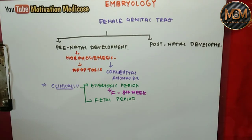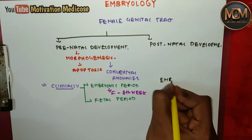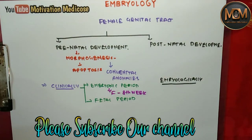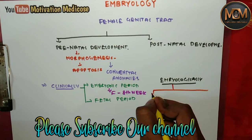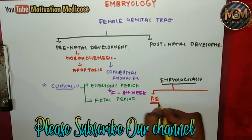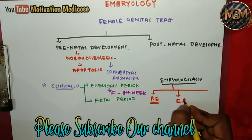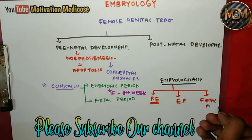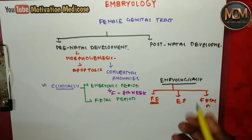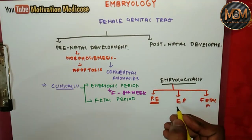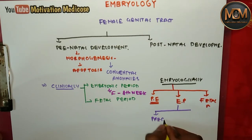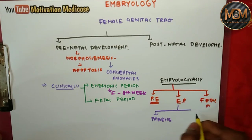Now let's talk about the embryological division. Embryologically, we have divided development into three parts: the pre-embryonic period, the embryonic period, and the fetal period. The embryonic period is further divided into two parts: the pre-embryonic period and the embryonic period proper.